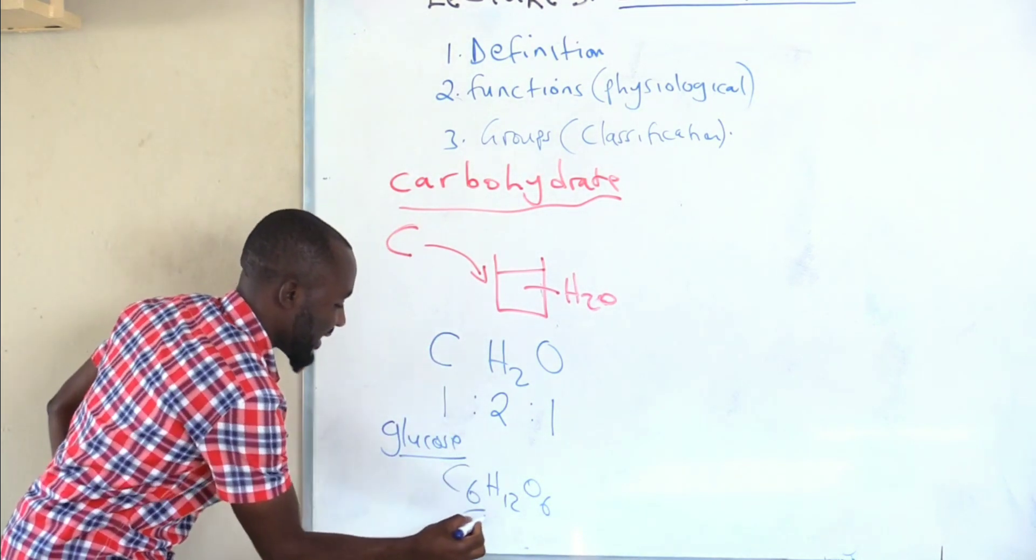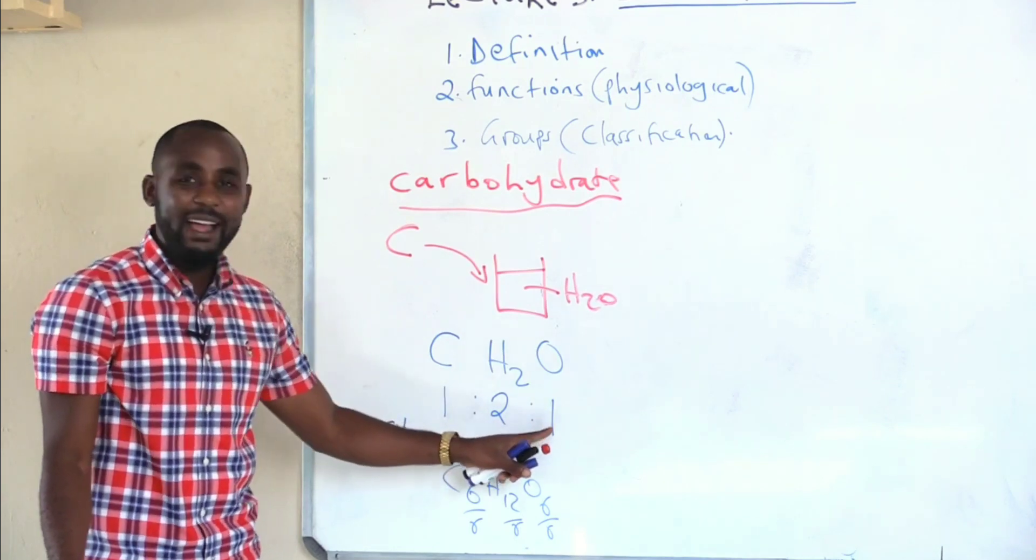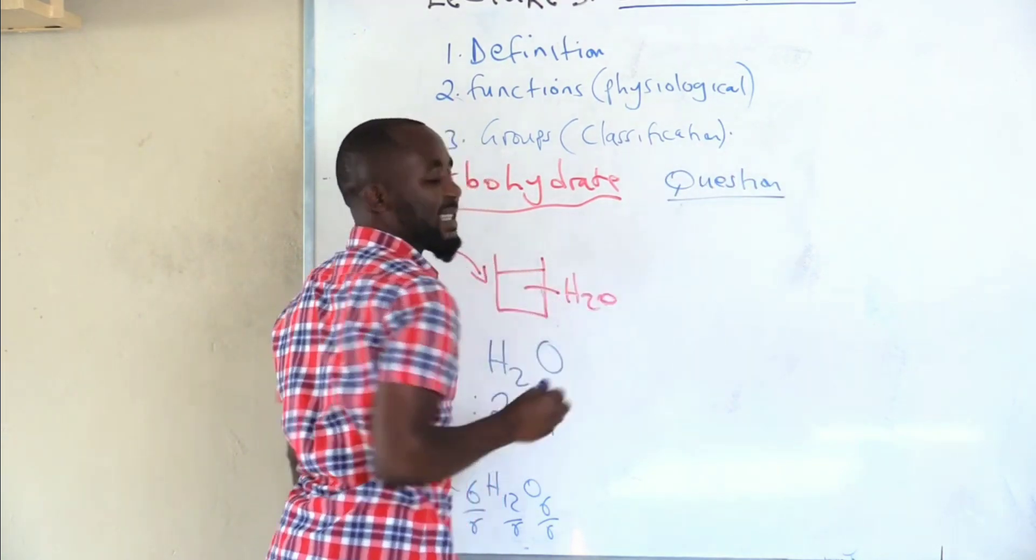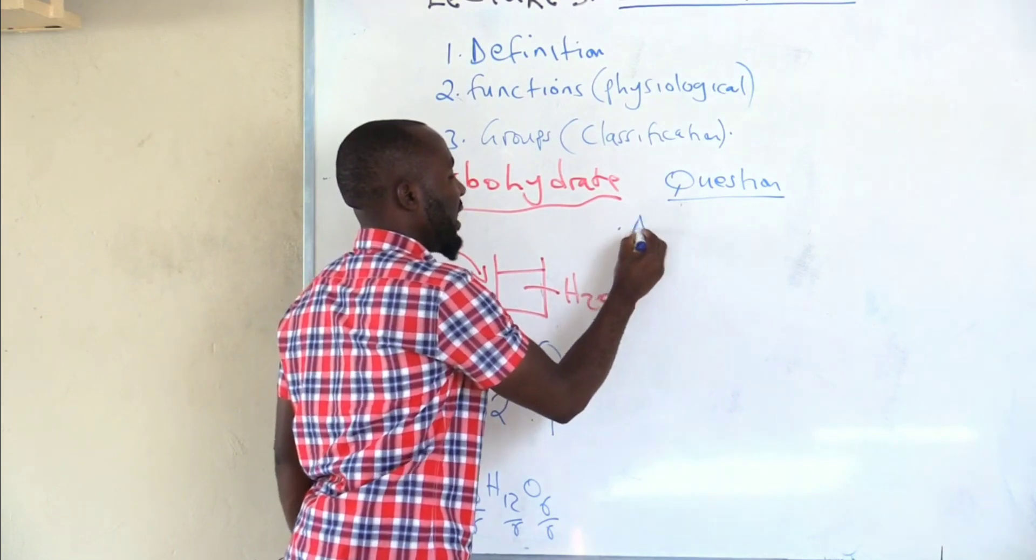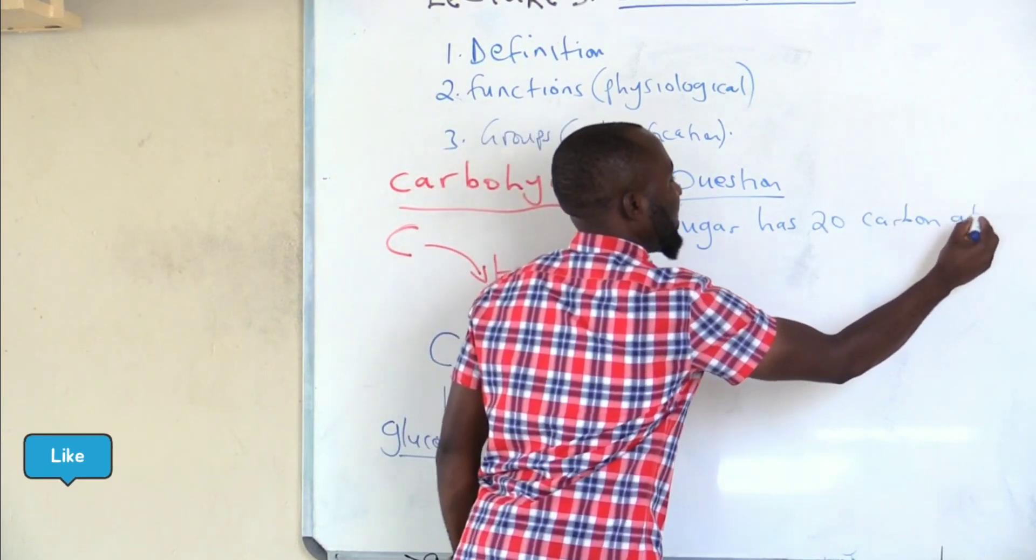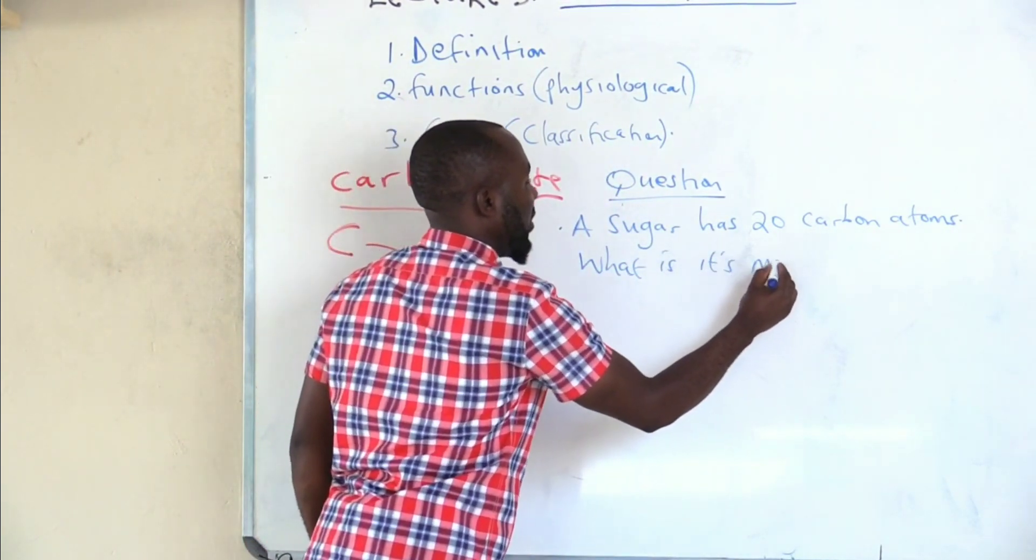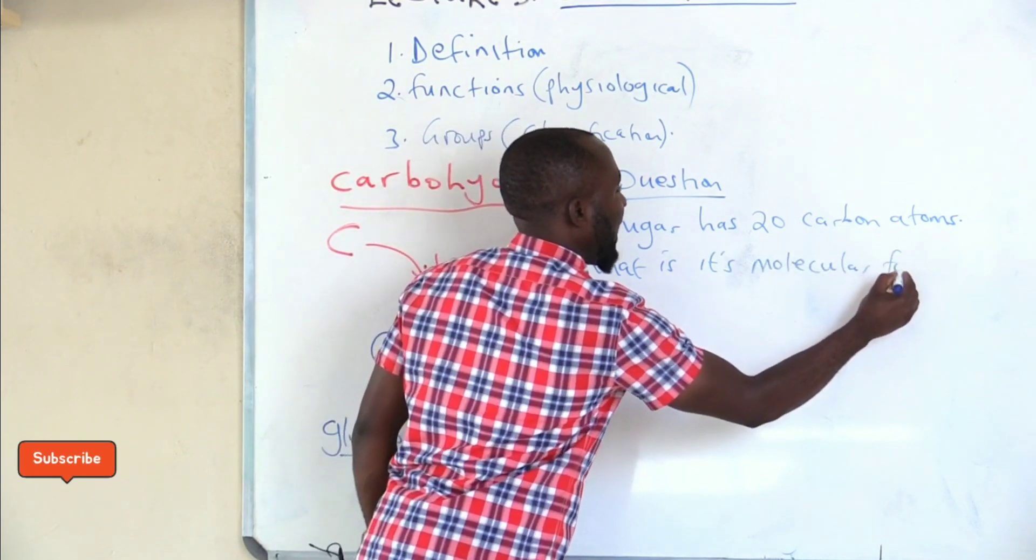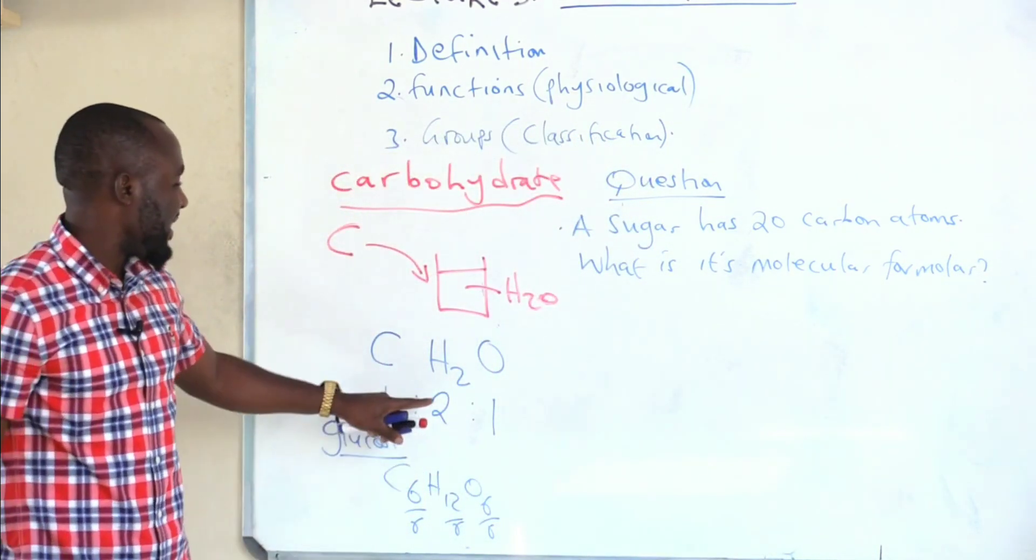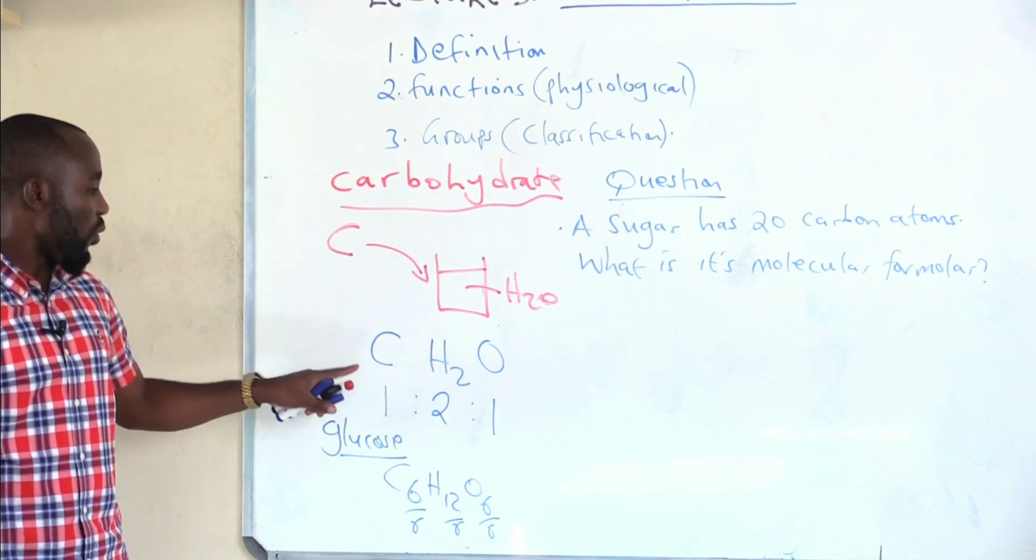If you divide throughout by six, the formula will go back to one, two, to one. What does this mean? Let me ask you a question. Suppose I ask you to say, a sugar has 20 carbon atoms. What is its molecular formula? How can you answer that question? You use the same concept I've explained here. Because carbohydrates are made up of carbon, hydrogen, and oxygen in the ratio one to two to one, it means that their general formula is CH2ON, where this N stands for the number of carbon atoms.